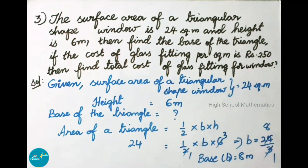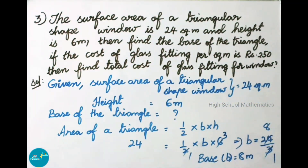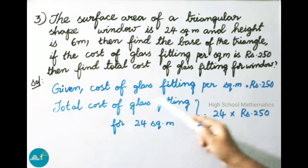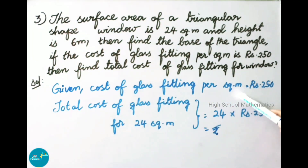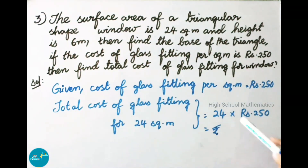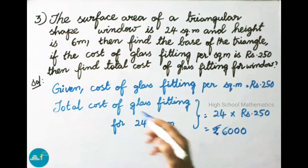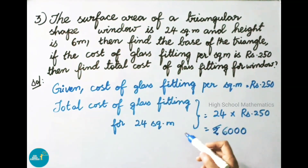In our question, cost of glass fitting per square meter is 250 rupees. Total cost of glass fitting equals 24 into 250 rupees. Multiplying both gives 6,000 rupees. Therefore total cost of glass fitting for 24 square meters is 6,000 rupees.